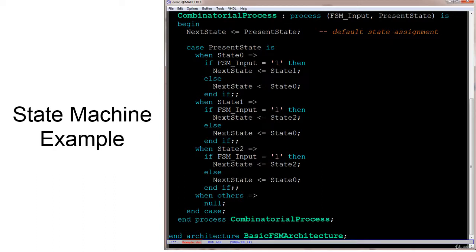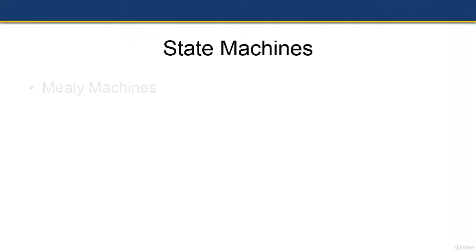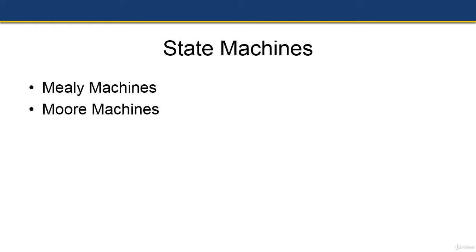One thing to point out about this example is that while it shows the basic structure of a state machine, it's somewhat fruitless because it has inputs but no outputs. Next we'll look at outputs. The two types of state machines we'll examine are the Mealy and the Moore. Mealy state machine outputs are a function of the current state and inputs, while Moore state machine outputs are strictly a function of the current state.